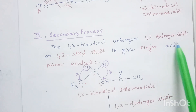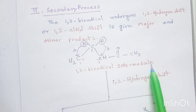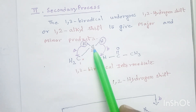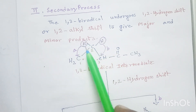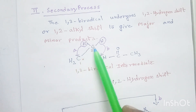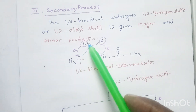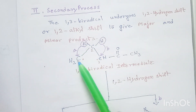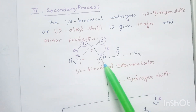In the secondary process, the 1,3 biradical undergoes a 1,2 hydrogen shift or 1,2 alkyl shift to give major and minor products. There is a hydrogen on each carbon of the biradical. Either hydrogen can migrate to the adjacent radical carbon. If this hydrogen migrates to this CH2 radical, this is route A. If this hydrogen shifts to this CH radical, this is route B.